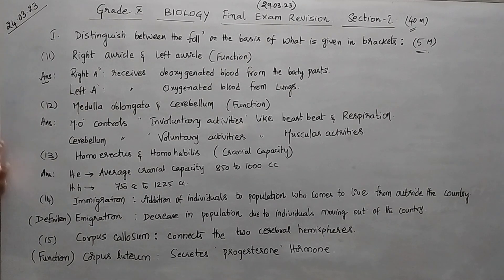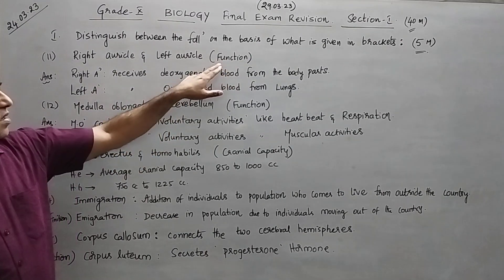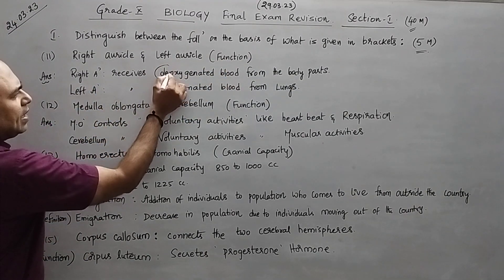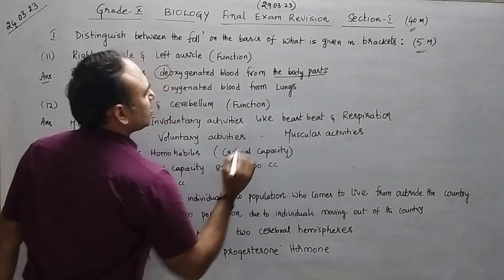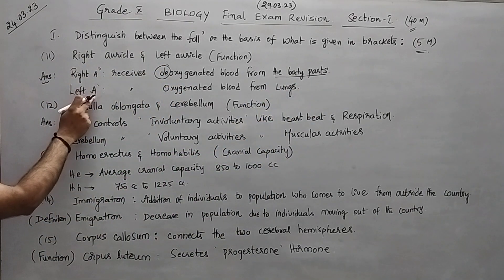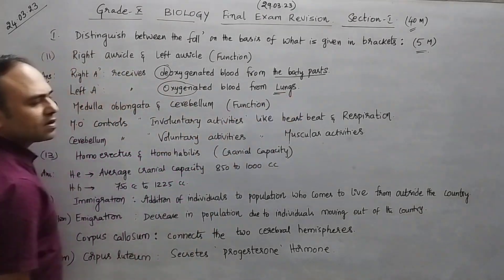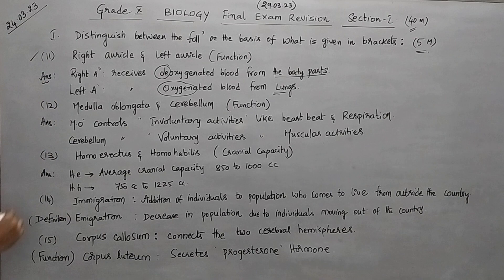Now question number eleven to fifteen. Right auricle and left auricle, difference in the function. So right auricle will receive deoxygenated blood from the body parts, but if you take left auricle it will receive oxygenated blood from the lungs. So that is the difference.